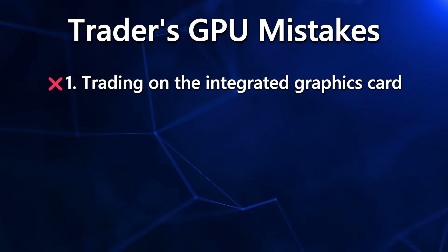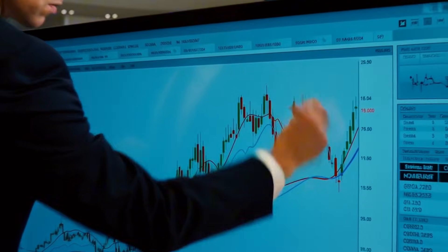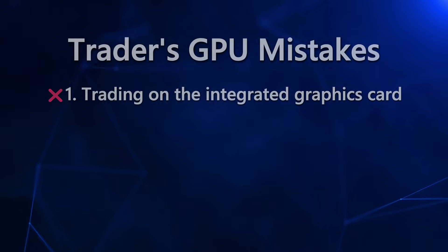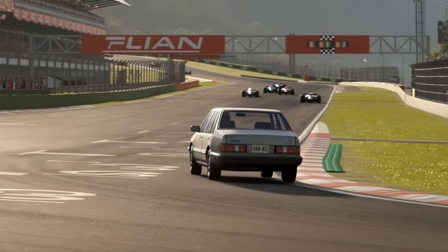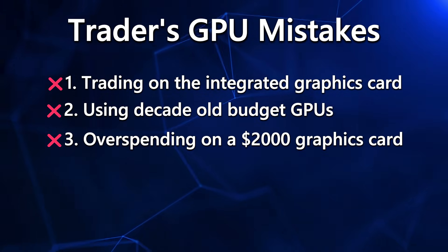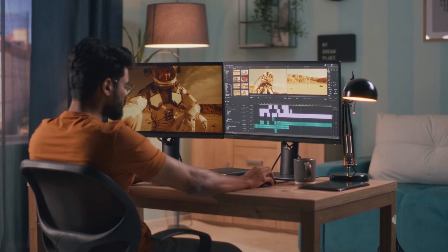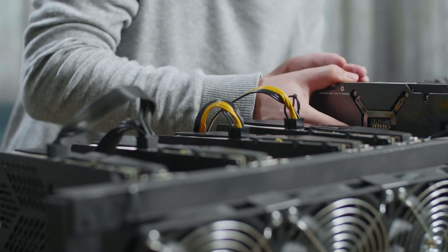Now let me run through the big GPU mistakes I see traders make almost every day, because this stuff will save you from massive headaches. Mistake number one: trading on the integrated graphics card. If your trading setup is being powered by Intel UHD graphics, you're basically scalping the market with crayons — it works in theory, but barely. Mistake number two: using decade-old budget GPUs. If your GPU wheezes when you open Thinkorswim, it's time to let it go. You wouldn't drive a 1998 Honda with 240,000 miles into a Formula One race — don't do it with trading either. Mistake number three: overspending on a $2,000 graphics card you'll never use to its full potential. Unless you're gaming at 4K, rendering the next Pixar movie, or secretly running a second life as a crypto miner, you don't need an NVIDIA RTX 5090 Uber Galactic Edition.